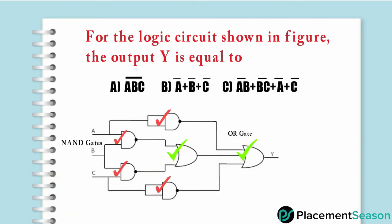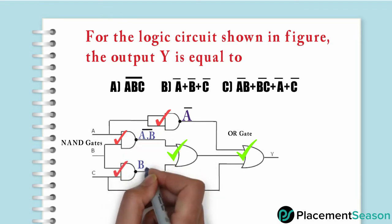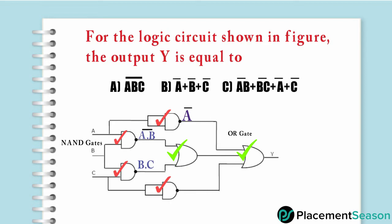As these are NAND gates, this gate has only A as input, so it will give output as A̅. Here, inputs are A and B, so output will be A̅B̅. For the third gate, output will be B̅C̅, and for the last, output will be C̅.